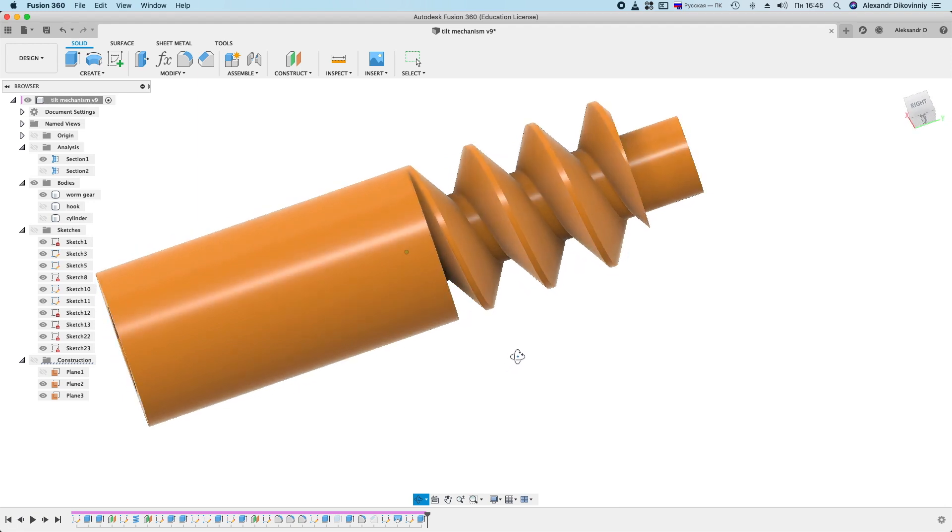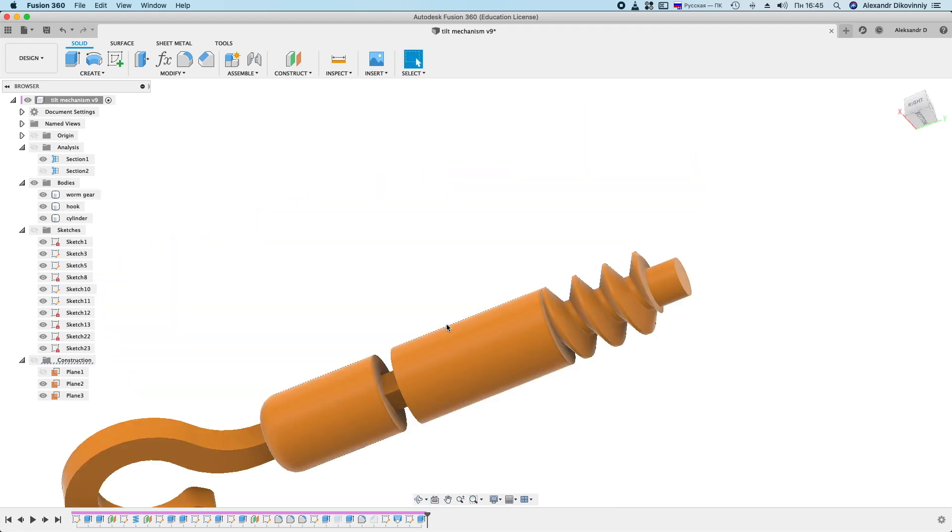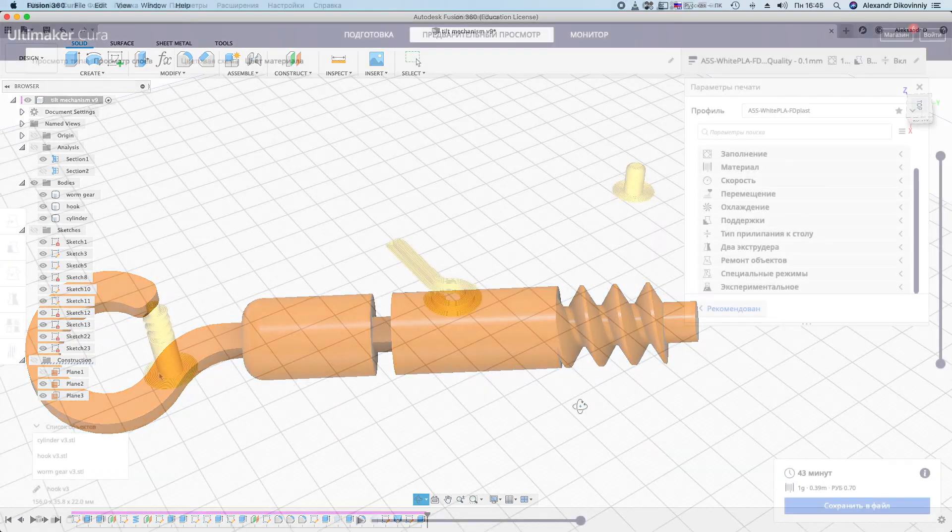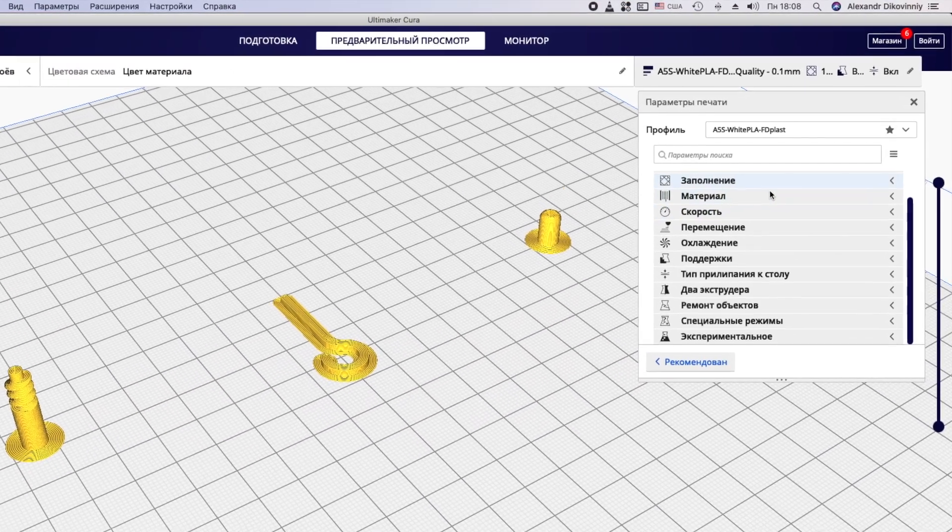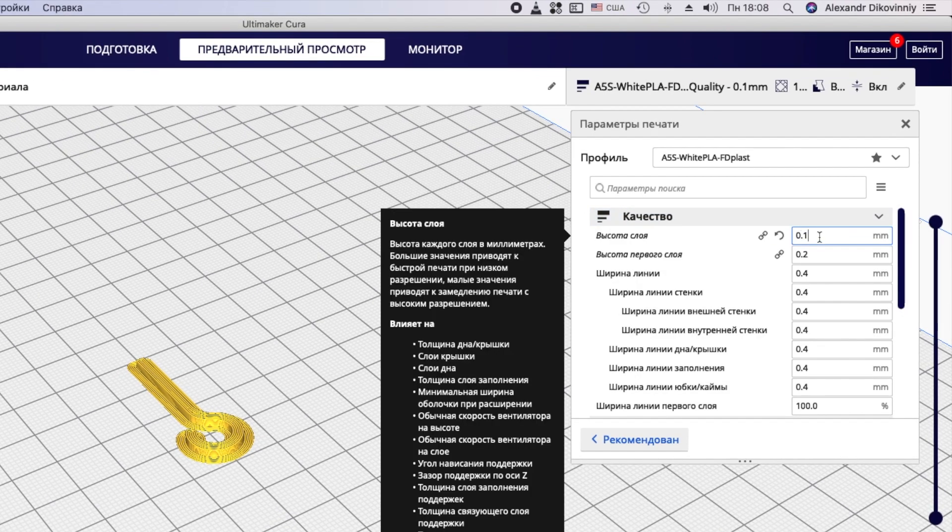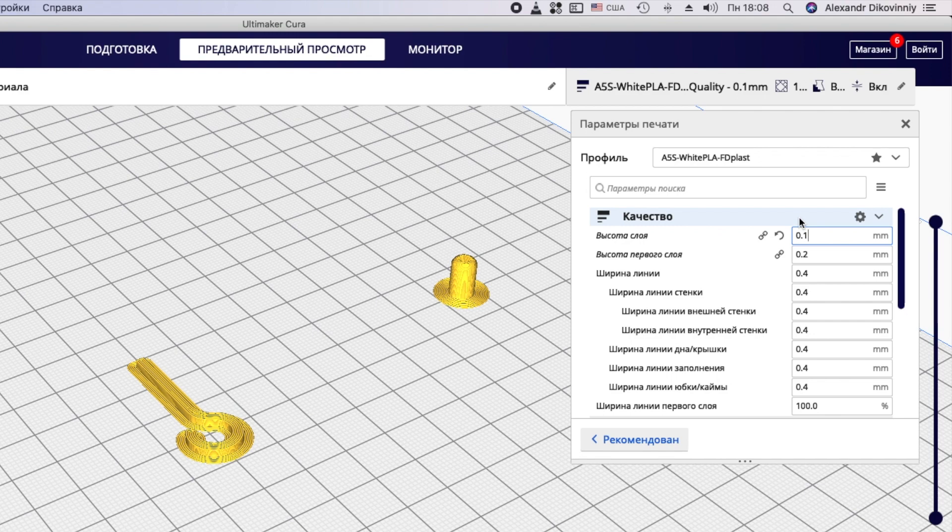Export the models to STL format and you can start printing. I will print from PLA plastic. Let's go to the Cura slicer. Main settings: the height of the layer is 0.1mm. This is necessary for accurate printing of the worm.